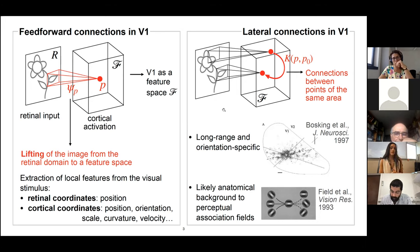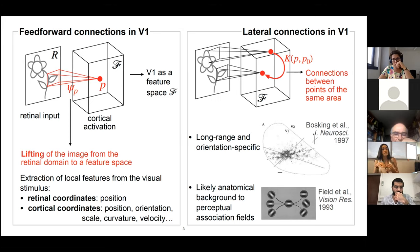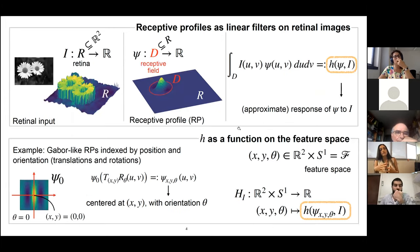We are interested in the emergence of geometric structures compatible with the known properties of lateral connectivity. Specifically, we're talking about long-range connectivity that extends beyond the extent of the receptive fields of the neurons, and most importantly, it's orientation specific. It extends along the axis of the preferred orientation of the starting neuron and tends to target cells that are oriented coherently and in line with this axis. These properties also reflect on the perceptual side through mechanisms linked to contour integration, summarized by the concept of association fields.